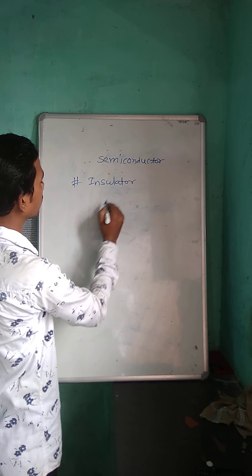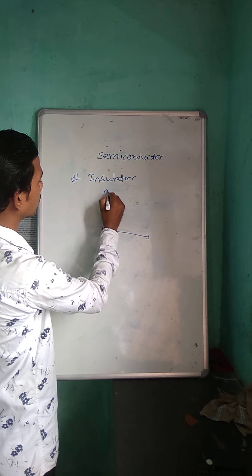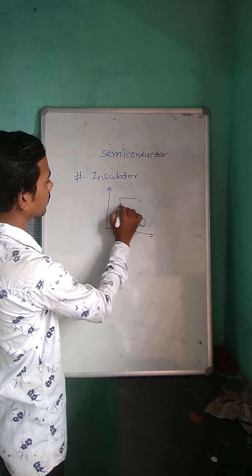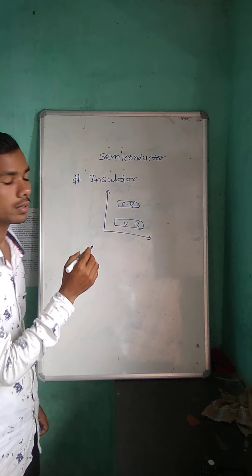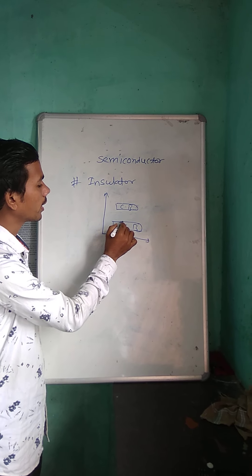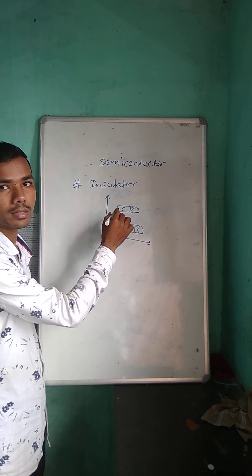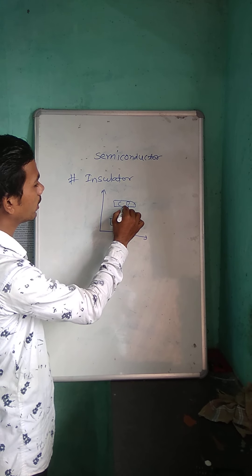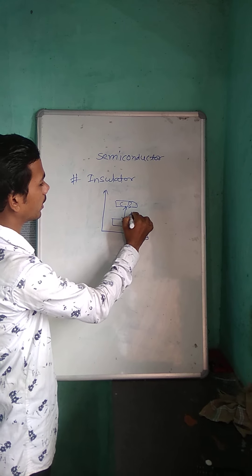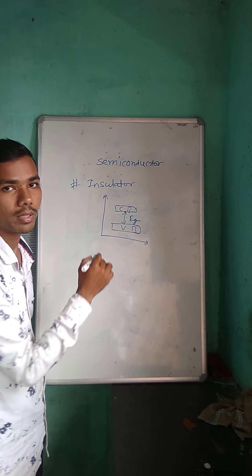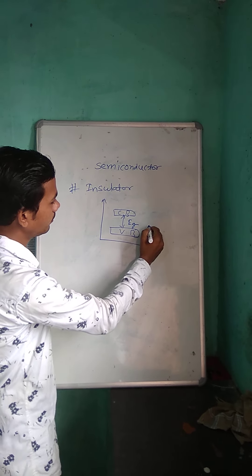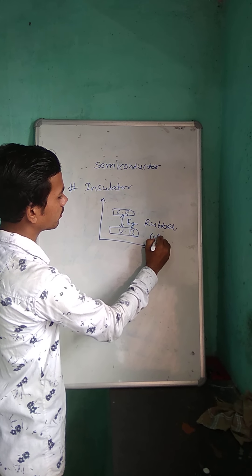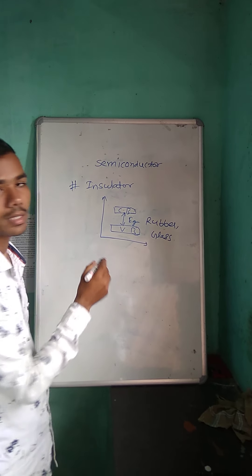In case of insulator, electron cannot jump from valence band to conduction band. That is called insulator. There is a very large gap in between valence band and conduction band. Rubber and glass are the best examples of insulator.